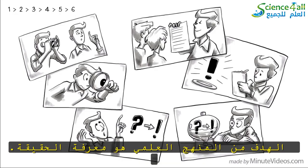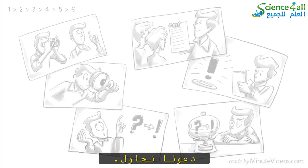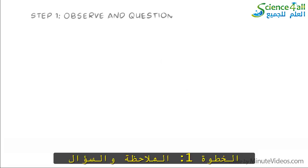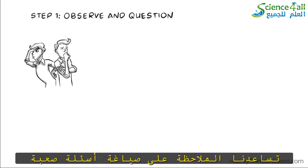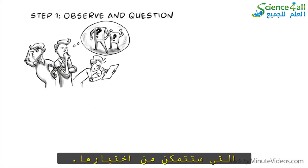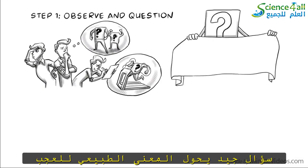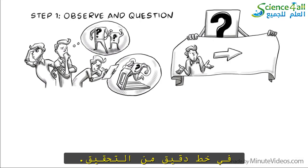The goal of the scientific method is to find out the truth. Let's try. Step 1: Observe and question. Observation helps us formulate challenging questions that you will be able to test.